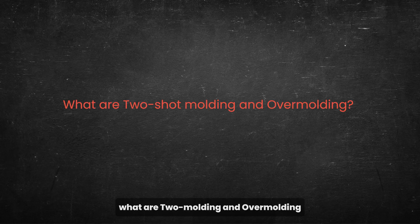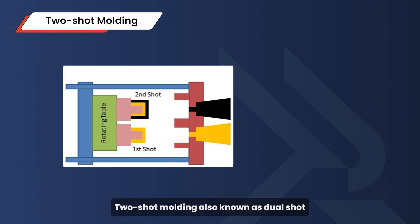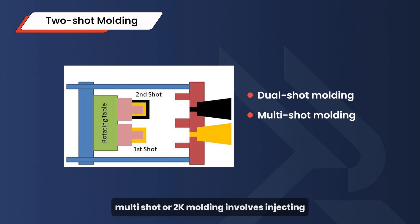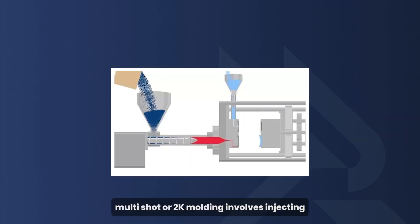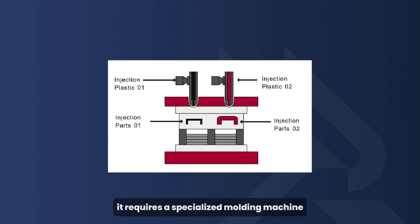What are two-shot molding and over-molding? Two-shot molding, also known as dual-shot, multi-shot, or 2K molding, involves injecting two different materials in a single machining cycle. It requires a specialized molding machine that is equipped with two or more injection units. Here is how it works.